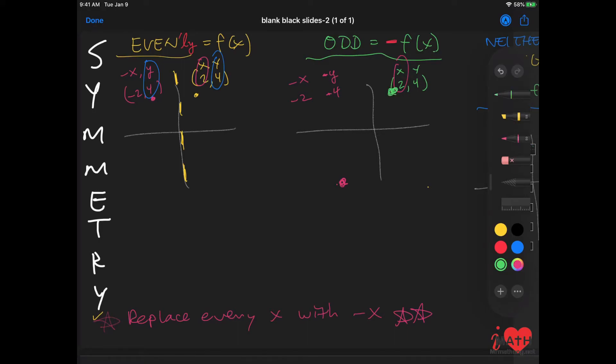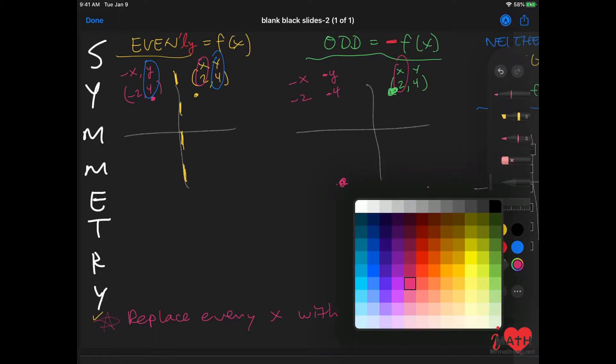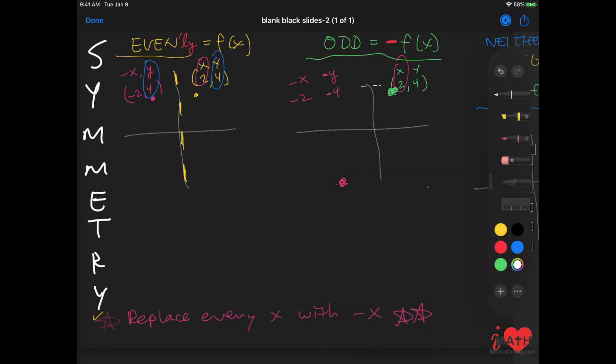And that is odd because it is symmetrical about the origin. It's rotated 180 degrees. Here is 90 degrees, and then this is another 90 degrees in this direction.